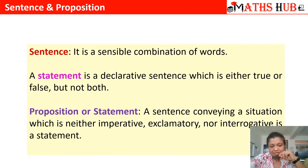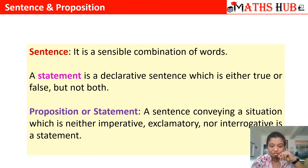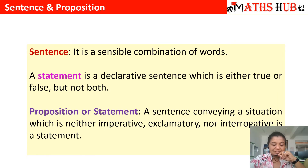A sentence is basically a sensible combination of words. From the very beginning when you start talking, you make a group of sensible words and communicate them to somebody else so that they can understand. So it is just a sensible combination of words.